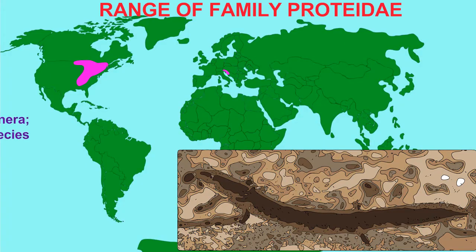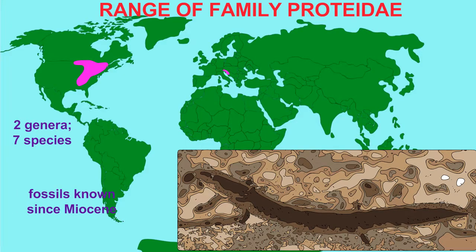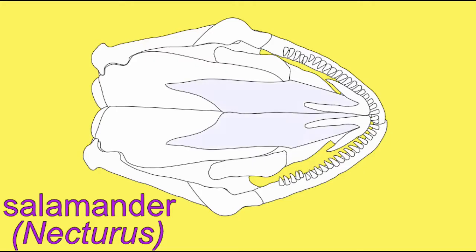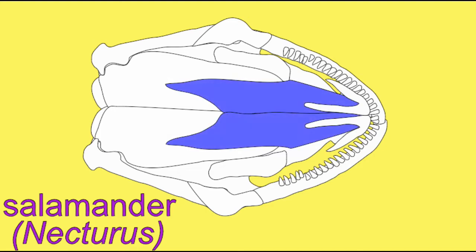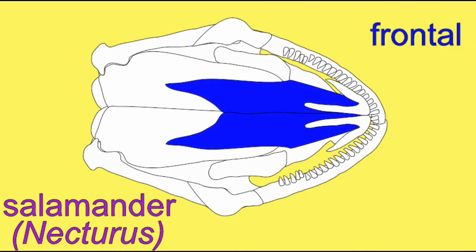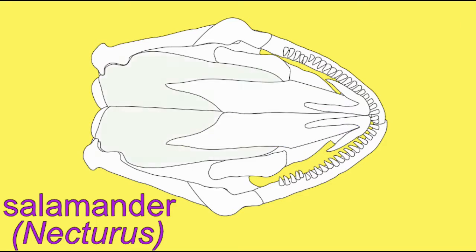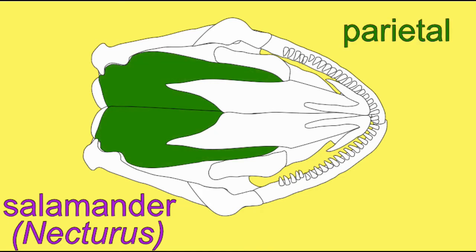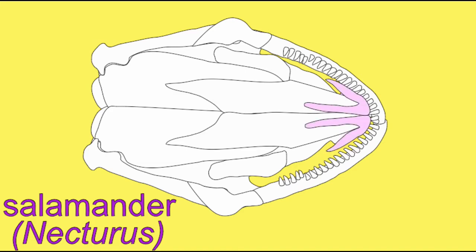These images here are of the salamander genus Nectoris in the family Proteidae. Note that, as expected, the dorsal portion of the cranium is composed of prominent frontal and parietal bones. As is typical in the ancestral state, the cranium is flat. While some salamanders possess a maxillary bone, shown here in red, the genus Nectoris lacks it.